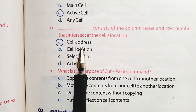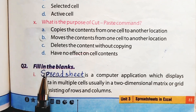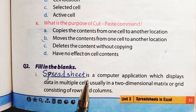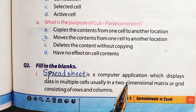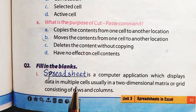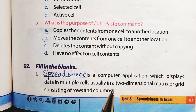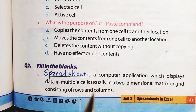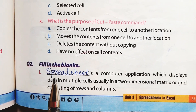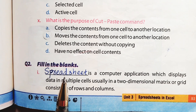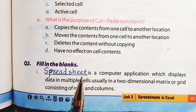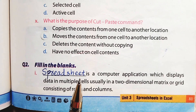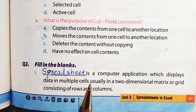Question number 2 is fill in the blanks. Part number 1: Dash is a computer application which displays data in multiple cells, usually in a two-dimensional matrix or grid consisting of rows and columns. The answer is spreadsheet — a computer application in which data may be entered into cells formed by the intersection of columns and rows.